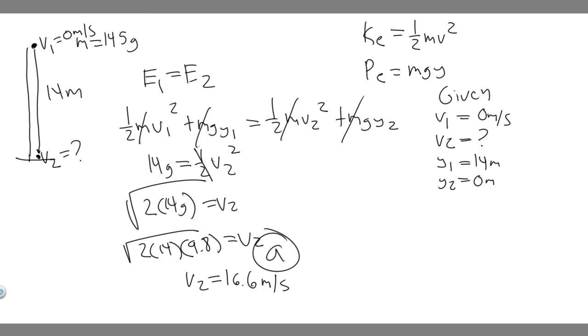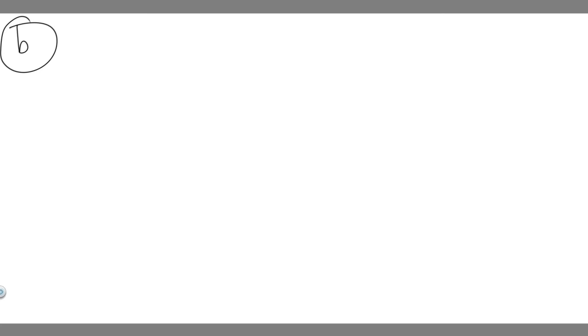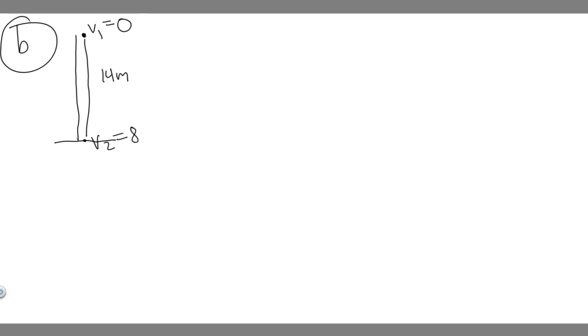I'm going to go ahead and erase what's on screen, so write down the answer to A if you need it. Now let's do Part B. This one will be a little different but basically the same approach. Here we know it hits the ground with a speed of 8 meters per second and we need to find the average force of air resistance. Let me redraw the situation: the baseball starts here, ends at the ground, traveling 14 meters. V1 is again zero, and V2 is 8 meters per second. There will be some force of air resistance slowing it down — we found it would have been 16.6 m/s without resistance, so it's being slowed down.